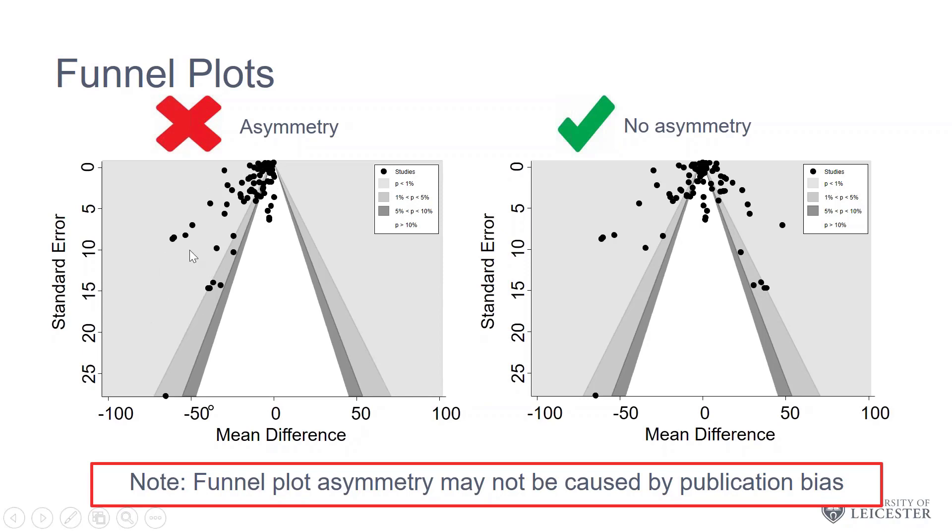On the left here is the plot we've been looking at where we can see the asymmetry with all our points towards the left-hand side of the plot. This right-hand plot we can see that we have this more random scatter of points across the plot, which potentially suggests publication bias might not be such an issue.